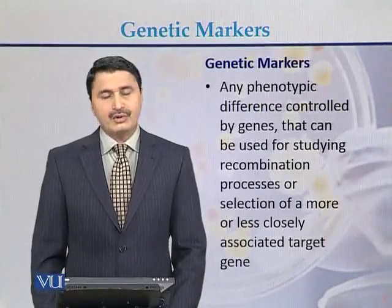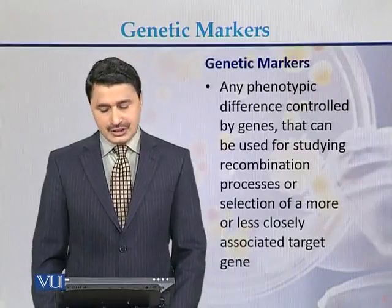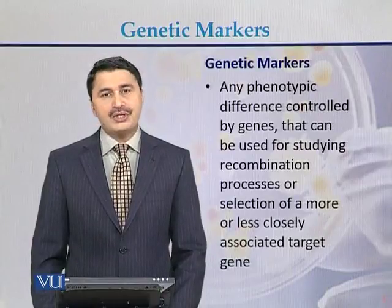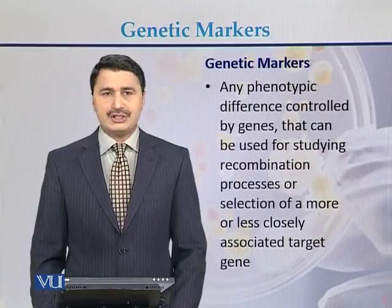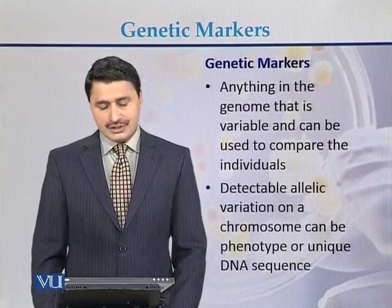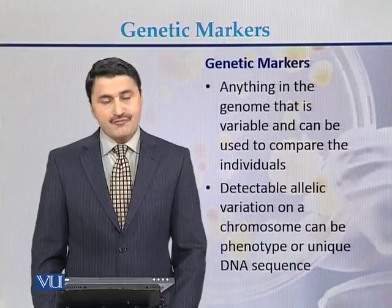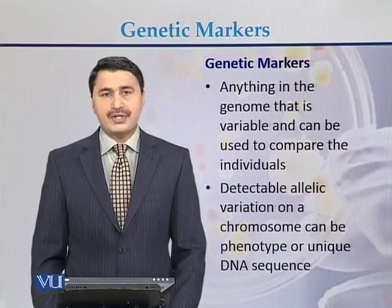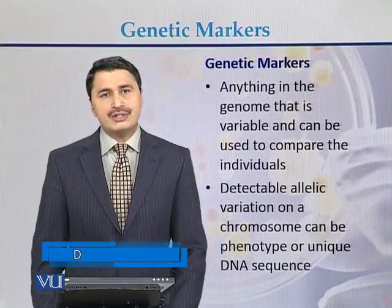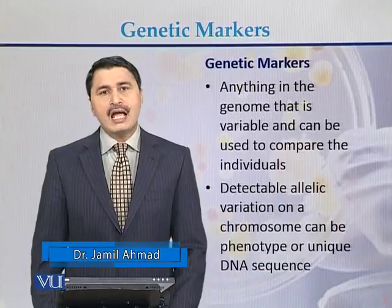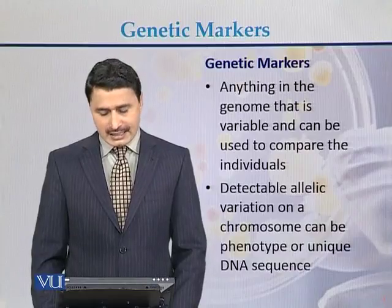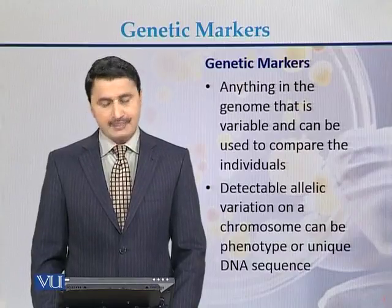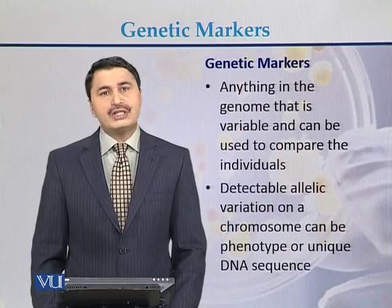Genetic markers are any phenotypic difference controlled by genes that can be used for studying the recombination processes or selection of more or less closely associated target genes. In other words, anything in the genome that is variable and can be used to compare individuals — any sequence that is variable in the genome and can be used to study the variations between individuals — is called a genetic marker. The detectable allelic variation on the chromosome can be a phenotype or it can be a unique DNA sequence.